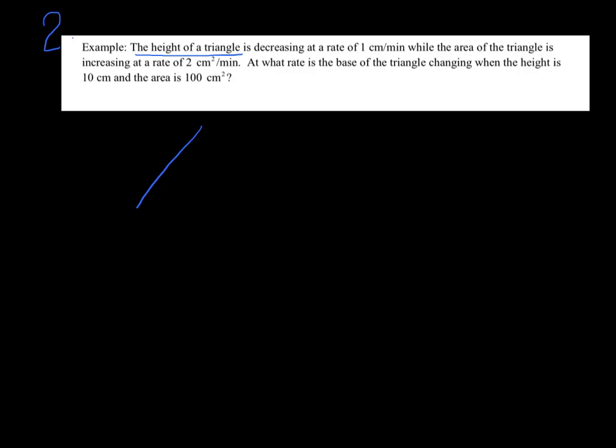Notice it says the height of a triangle, but it doesn't say you have a right triangle, so don't assume it's right. Let's draw a nice triangle. The height is drawn perpendicular to the base from your geometry days — label that H. The height of a triangle is decreasing at a rate — there's our keyword. They're not telling me the height; they're telling me the rate of the height.